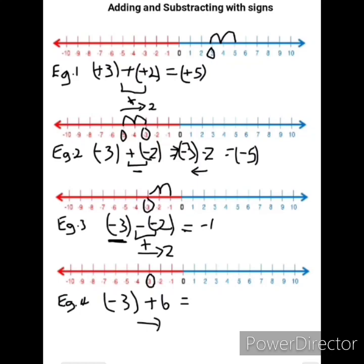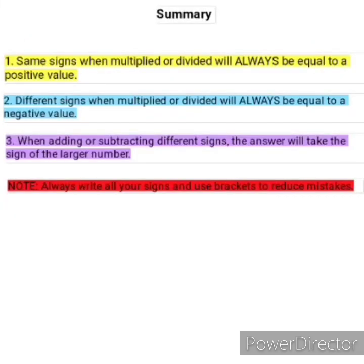Another key takeaway: the answer always takes the sign of the number with the highest value. In example 4, 6 is higher than 3 and 6 is positive, so our answer is positive. In summary of today's lesson: same signs when multiplied or divided always equal a positive value; different signs when multiplied or divided always equal a negative value; when adding or subtracting different signs, the answer takes the sign of the larger number. Also, always use brackets, especially if you're a beginner — this minimizes mistakes and reduces confusion.